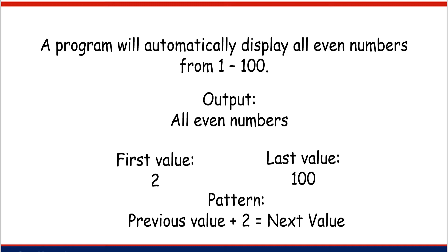The outputs are 2, 4, 6, 8, 10, or all even numbers from 1 to 100. Based on the pattern, you can get the next value by adding 2 to the previous value. For example, 2 plus 2 is equal to 4, 4 plus 2 is equal to 6, and so on.